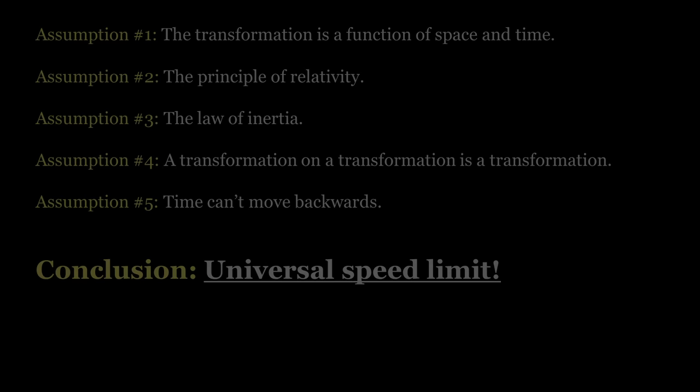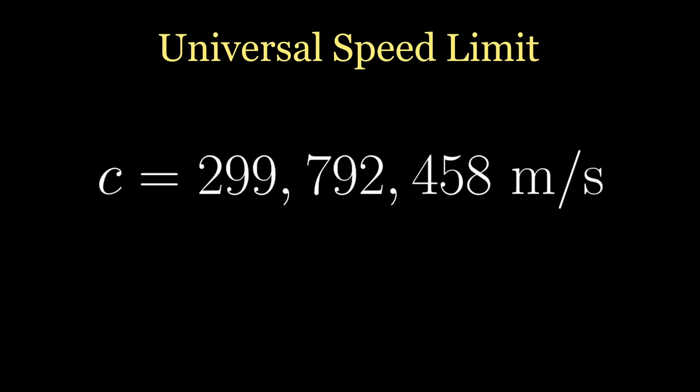So what exactly is the value of that universal speed limit anyway? To answer that question, you just have to start doing some basic experiments. And in our particular universe, it just so happens to be 299,792,458 meters per second. A very large number. So large, in fact, that we can usually approximate it as infinite and still get reliably good results.